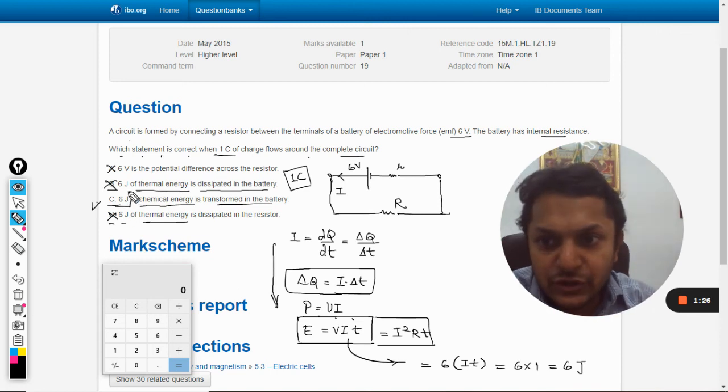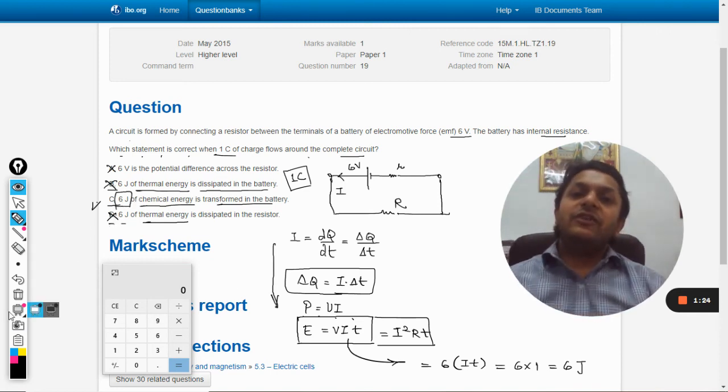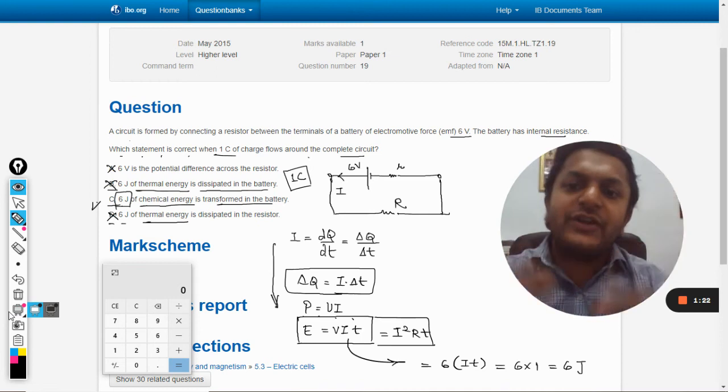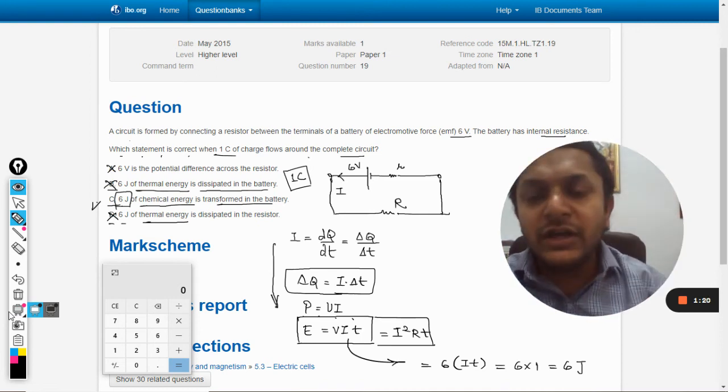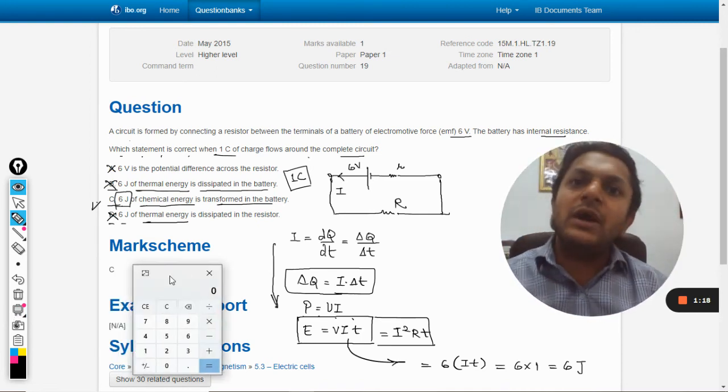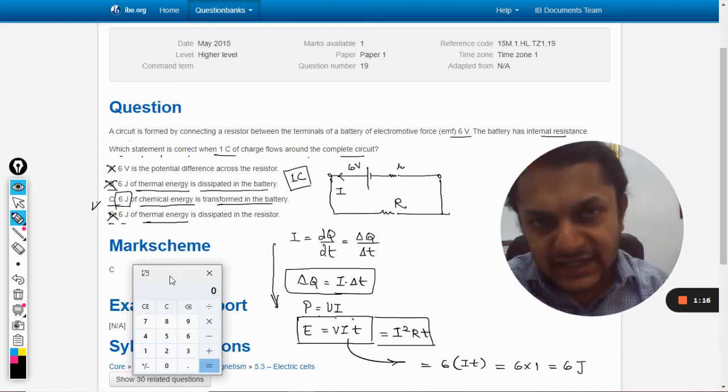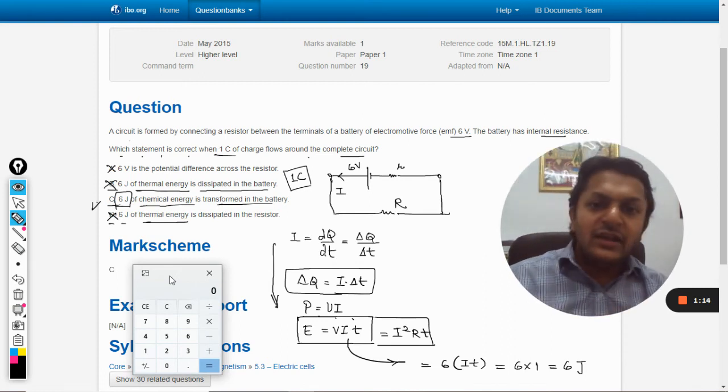And yes, absolutely correct. Our answer is coming out to be six joule of chemical energy is being transformed in the battery. According to the mark scheme also, the answer is C, so we are absolutely right.